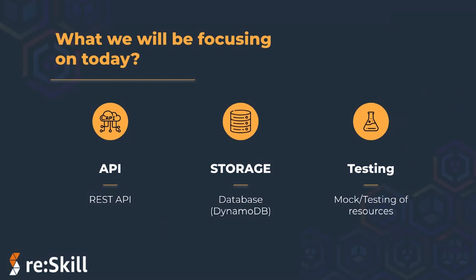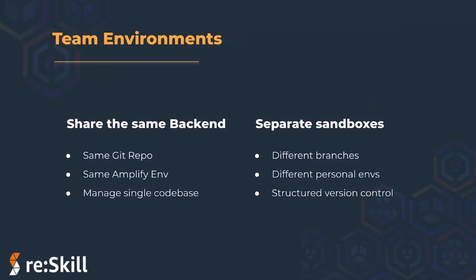Our focus is to create a REST API endpoint and integrate it with a single Lambda function which performs CRUD operations with DynamoDB, and test the API endpoint using Amplify's local function mocking feature — which lets us test our Lambdas locally without going into the console or needing a client side. There is also a concept of team environments in AWS Amplify with two types: a shared backend with a single Git repository and single Amplify environment, and separate sandboxes where each developer can create their own personal environments with different branches and a structured version control system.